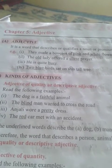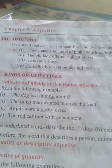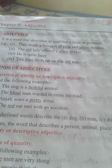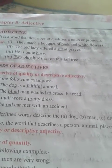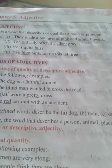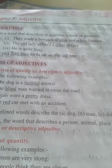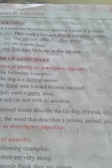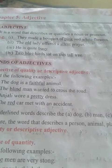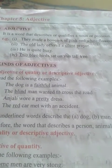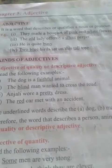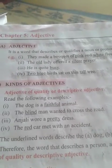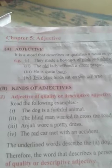Let us see point A. An adjective is a word that describes or qualifies a noun or pronoun. Examples: they made a bucket of pink and white flowers. The old lady offered a silent prayer. He is quite busy. Two blue birds sat on this tall tree. These are adjectives.